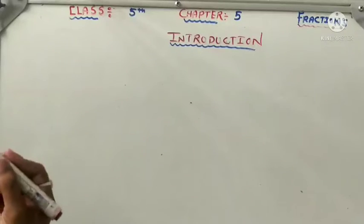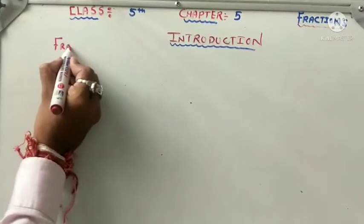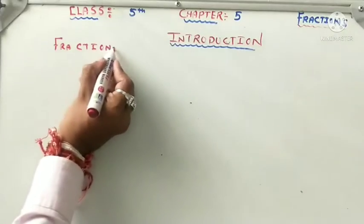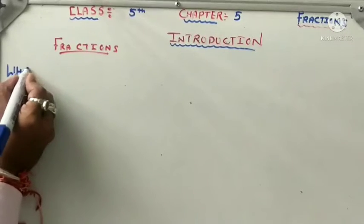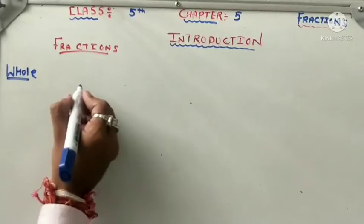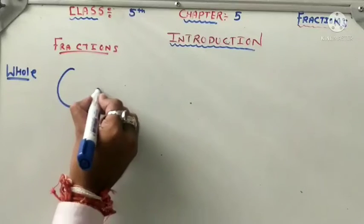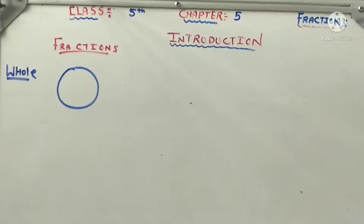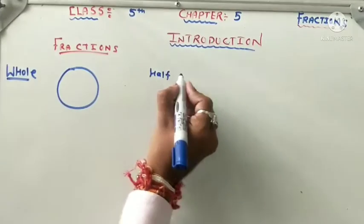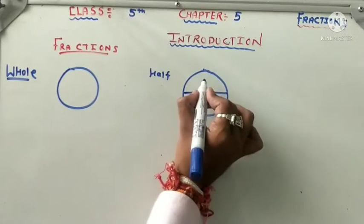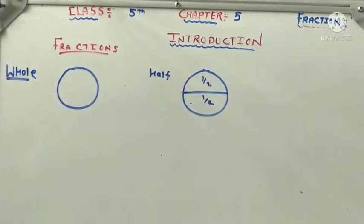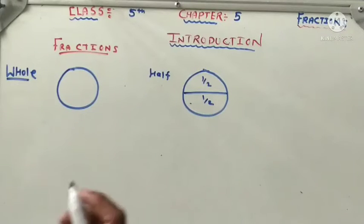The first topic is fractions. This is one whole. Then next is half. When a whole is divided into two equal parts, each part is called half, or one upon two.